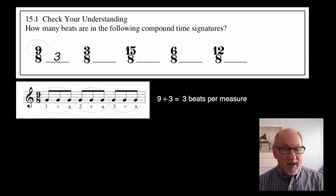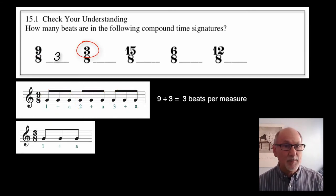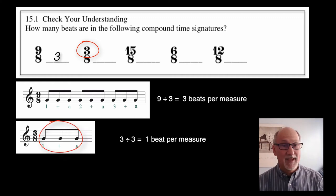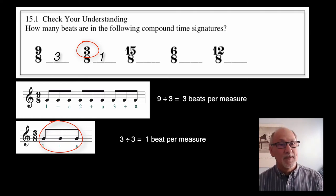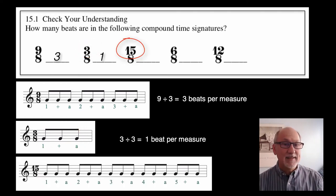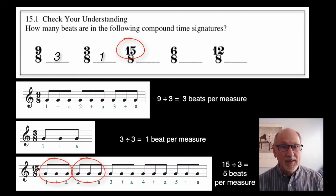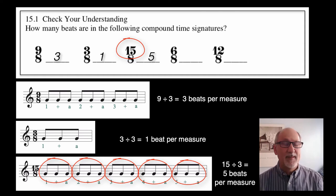The 3-8 means that there are 3 eighth notes per measure. But again, we would divide the 3 by 3, and you guessed it, just 1 beat per measure in 3-8. That goes by rather quickly. 15-8, again, divide it by 3, you could see that there would be 5 beats per measure. And I'll let you go ahead and think about what the next two would be.